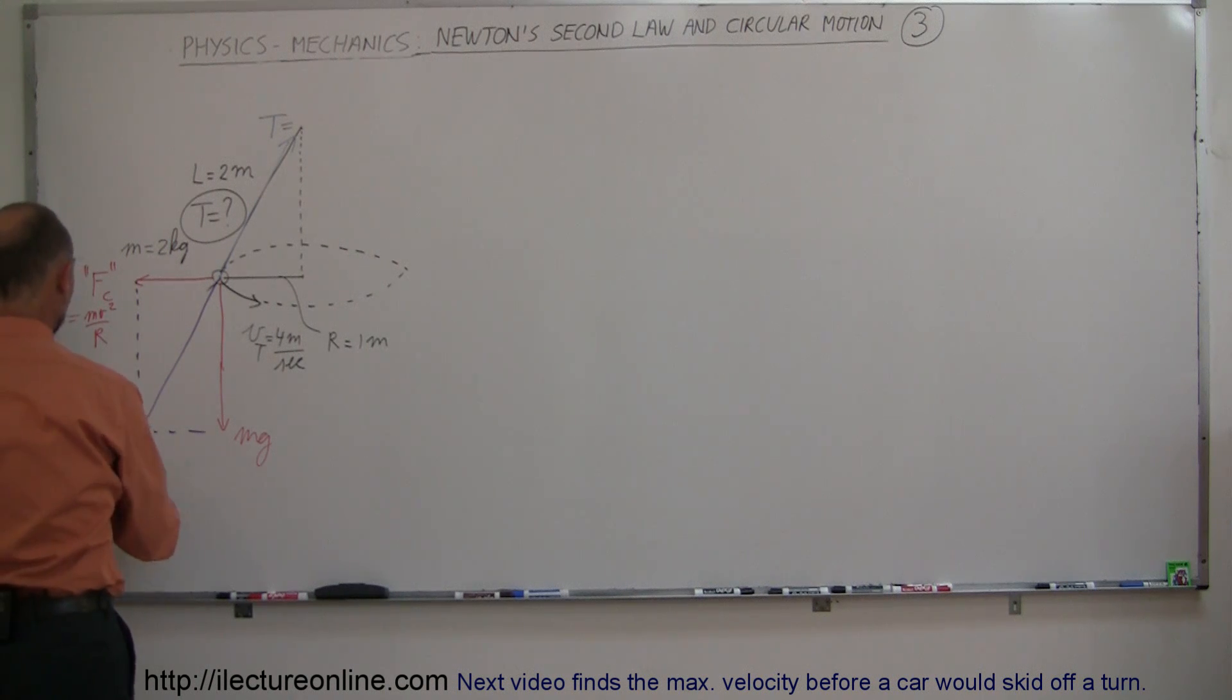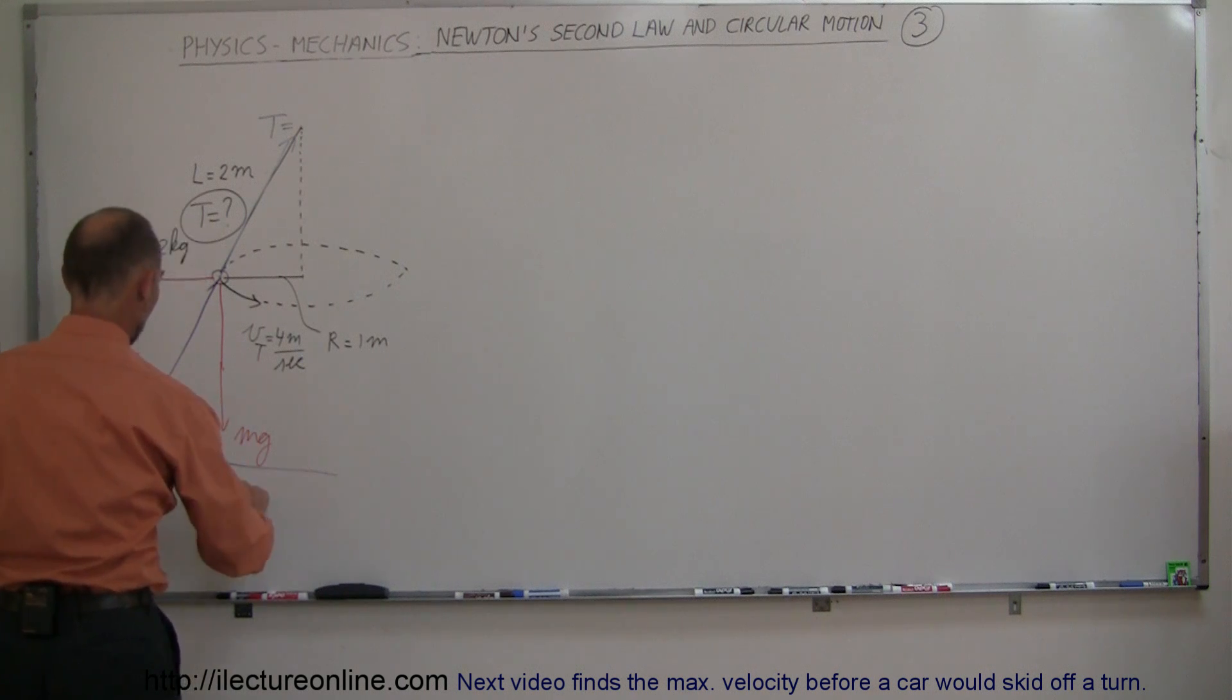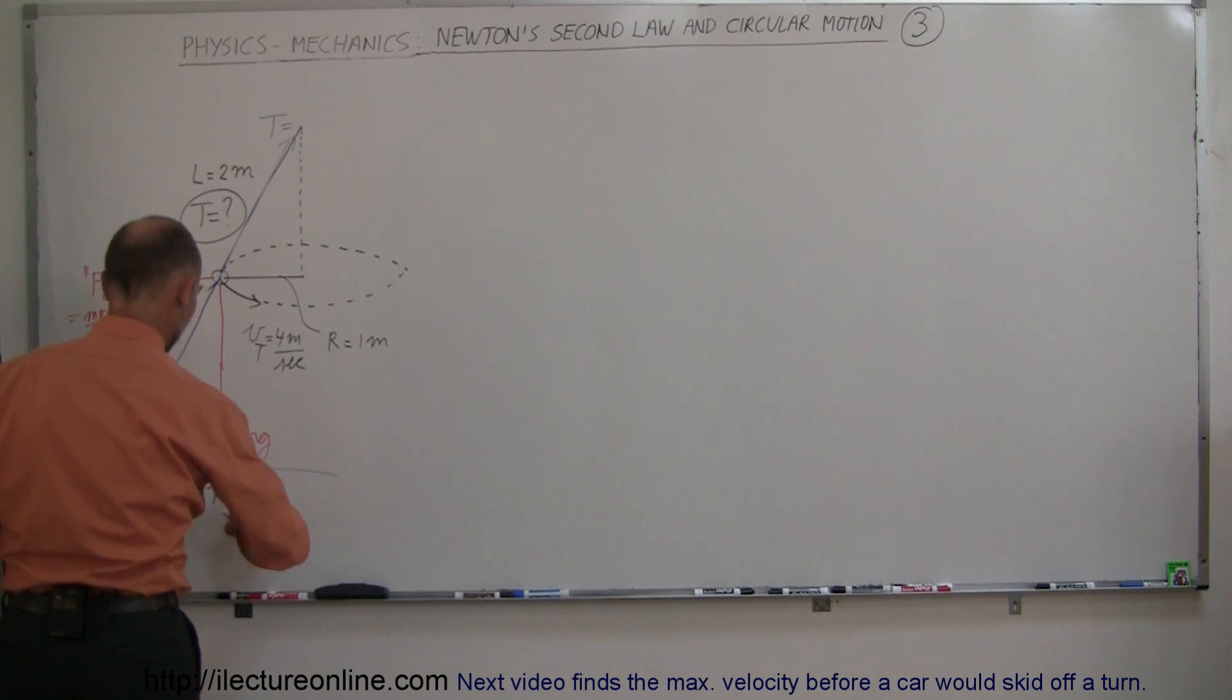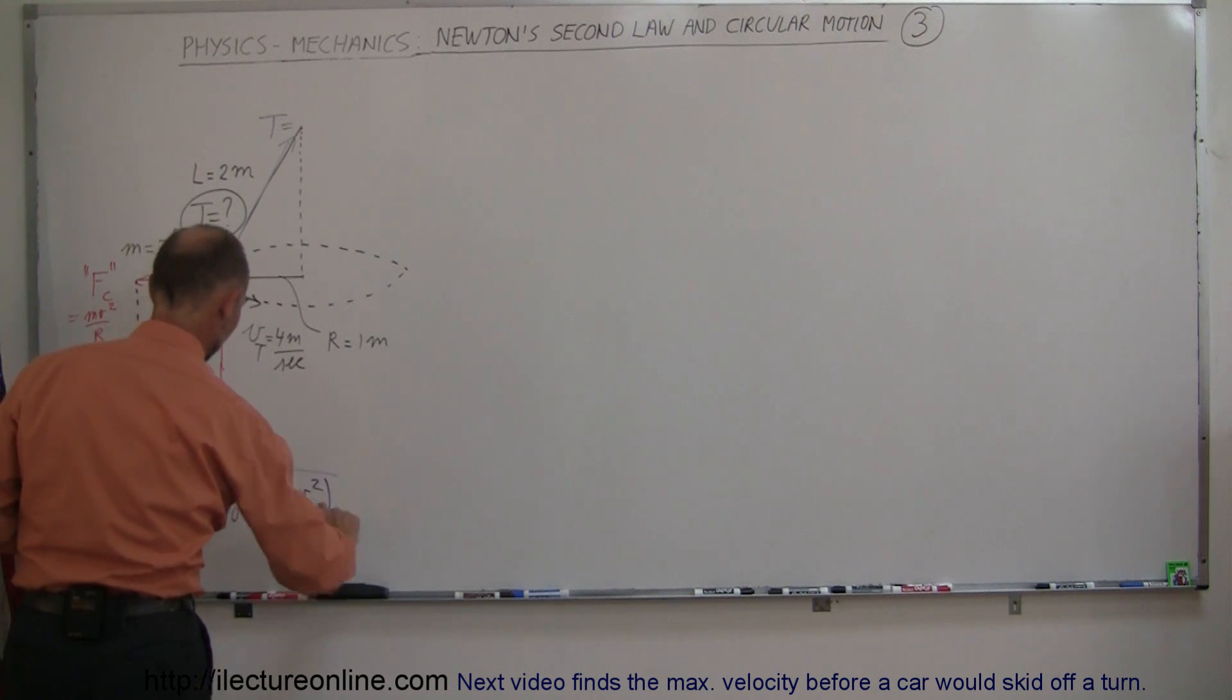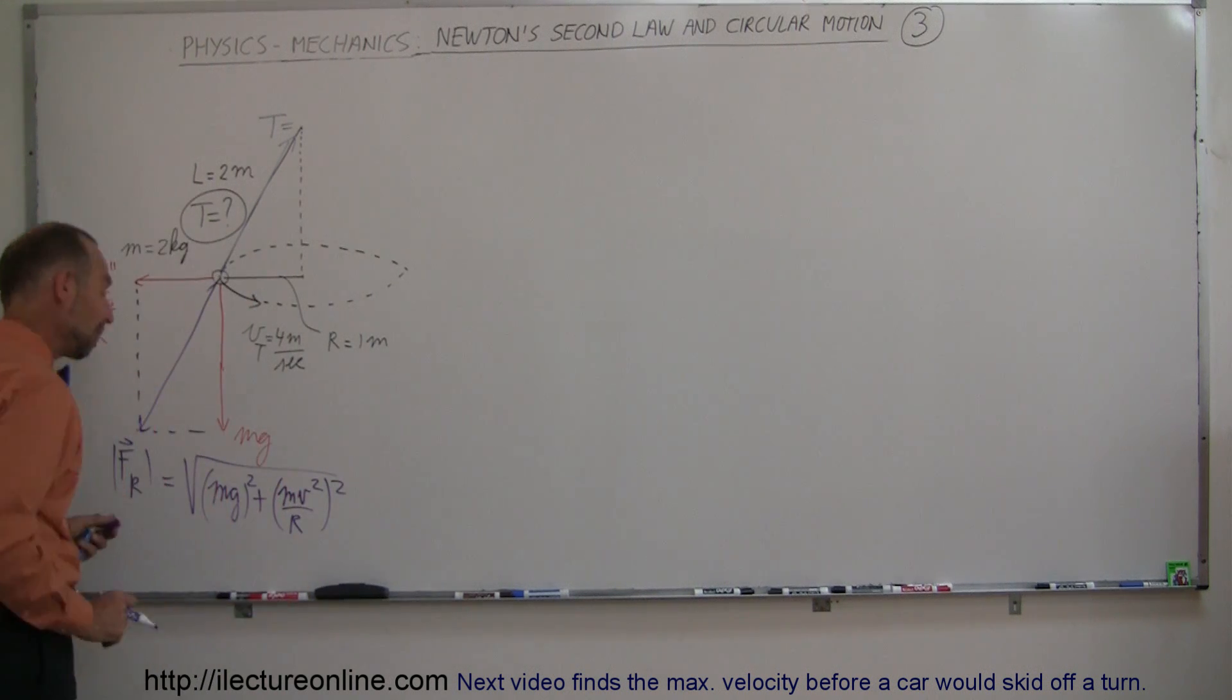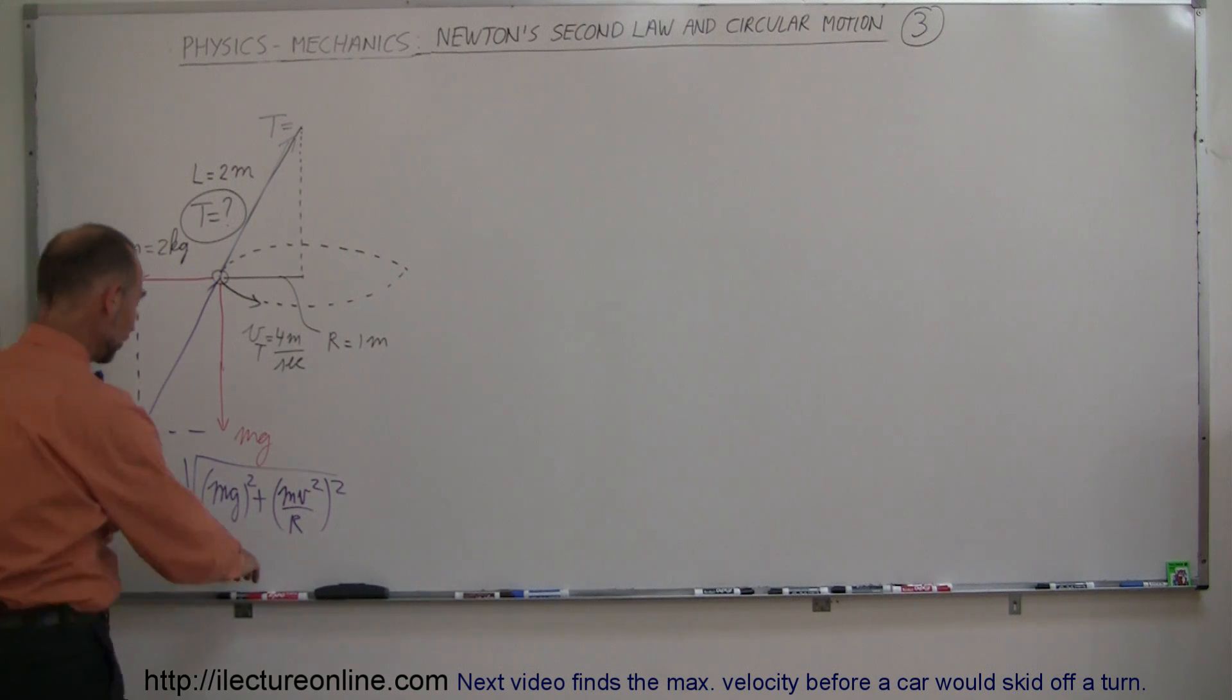To find the magnitude, it equals the square root of the sum of the squares of the two components: mg and mv squared over r. We square each component, and that gives us the magnitude of the resultant force. Let's plug in the numbers.